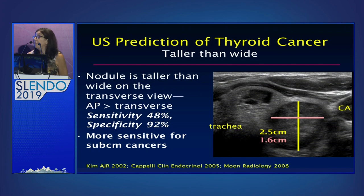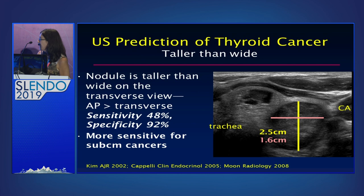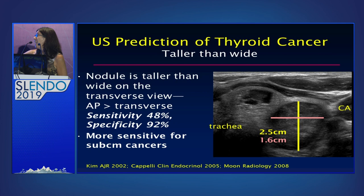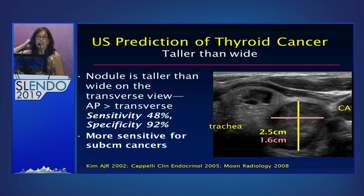Let's now turn to the fourth feature: taller than wide. Taller than wide is a characteristic defined predominantly based on sub-centimeter nodules, meaning that in the transverse view the nodule is taller than wide. Although I showed you a quite large nodule that is taller than wide, this feature is actually not very good for nodules over one to one and a half centimeters. It's very good for picking up micro cancers. Dr. Cooper is going to talk to you about why we want to leave micro cancers alone. But it's not as good for larger cancers, although the nodule I showed illustrates it — so not as helpful.